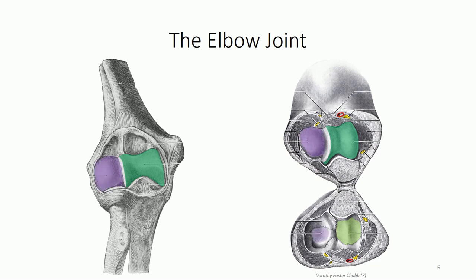Note that there is a third articulation in this region between the head of the radius and the ulna. Although contained within the same capsule, this articulation — known as the proximal radial ulnar joint — is by definition not considered part of the true elbow joint and will be discussed separately in the next lesson.